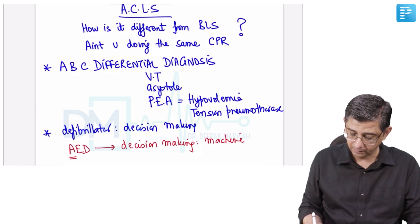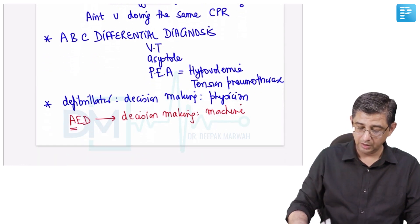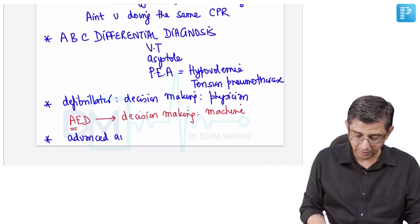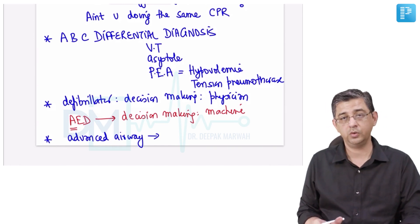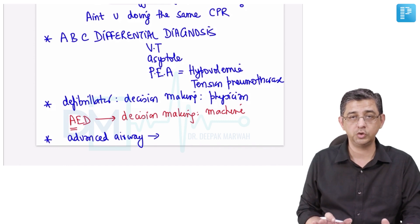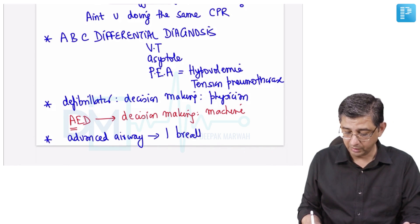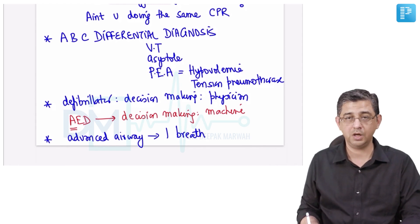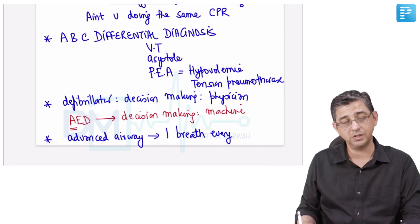Another highlight in ACLS is that the airway is secured with an advanced airway — you intubate the patient, or you can use a laryngeal mask airway. Once the advanced airway has been secured, you no longer follow the 30-to-2 rule. Now you give one breath every six seconds. The person giving chest compressions continues uninterrupted, while the person on the ambu bag presses it once every six seconds — one breath every six seconds, totaling about 10 breaths per minute.